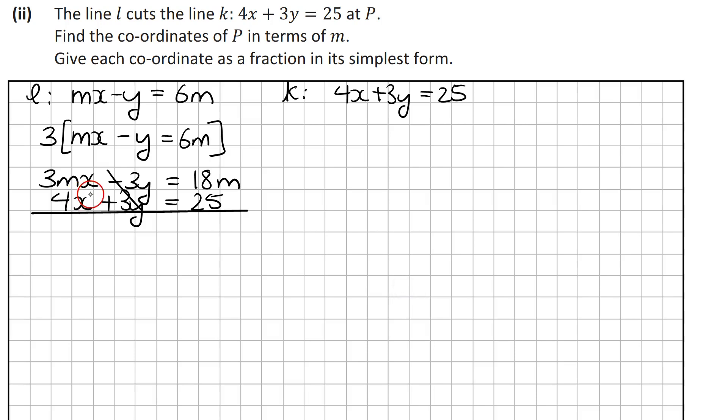Now, we're adding here 3mx and 4x, so the easiest thing to do is factor out the x straight away, which will give me 3m plus 4 times x.